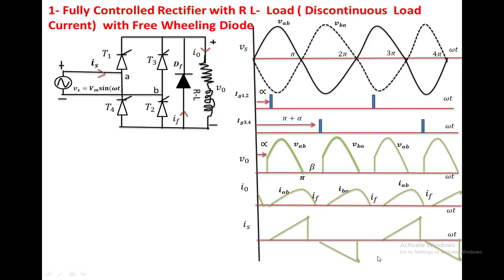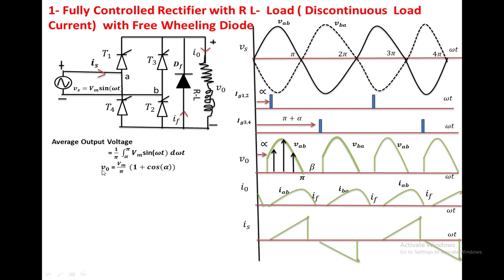To find the average output voltage: the waveform repeats every pi, so the base length is pi. We integrate over alpha to pi: V0 = (1/pi) × integral from alpha to pi of Vm sin(ωt) d(ωt), which gives V0 = (Vm/pi) × (1 + cos α).